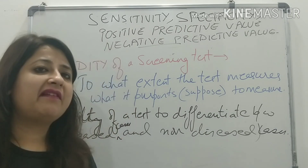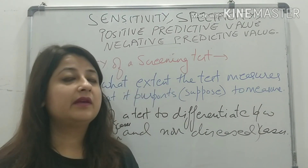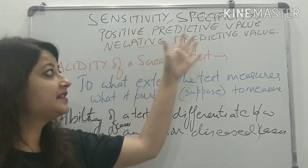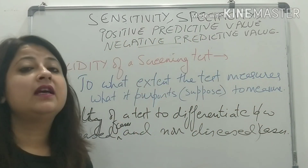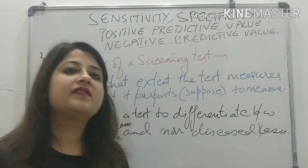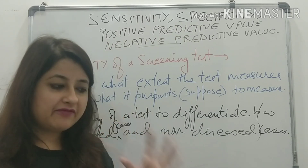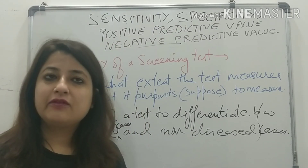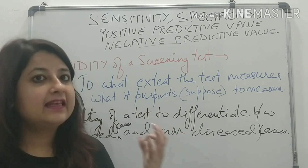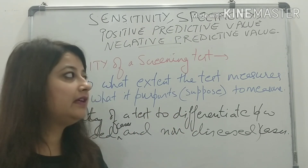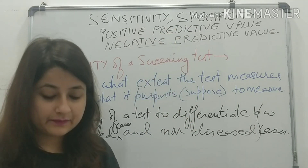I'm going to deal with a very important topic. Often students ask me about it. It is about sensitivity, specificity, positive predictive value, negative predictive value of a screening test. This definitely comes in your university questions and also MCQs, even to calculate. So we try to understand what exactly is the meaning of these things.